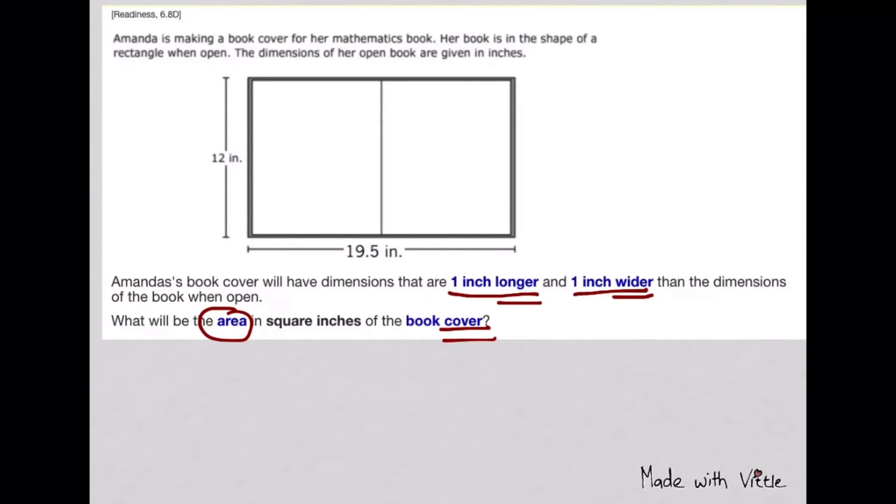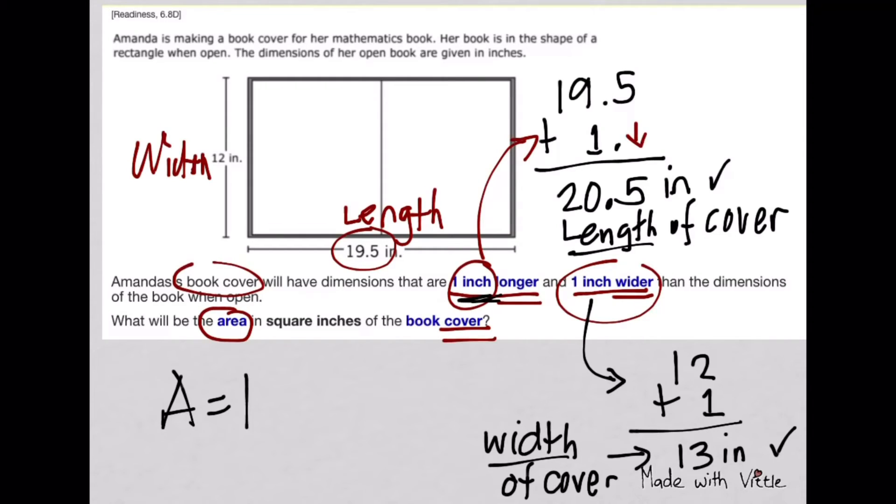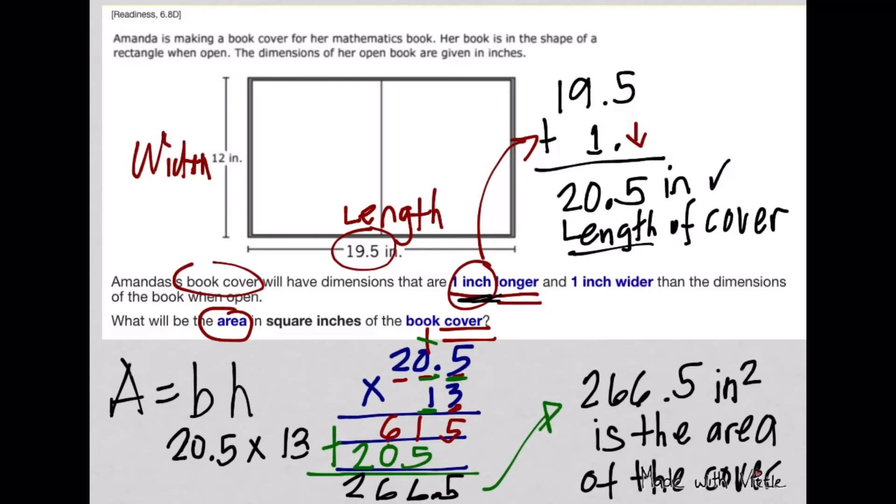Here there's a book that Amanda will cover and we want to find the area of the cover. They said the cover will be longer by 1 inch, so you have to add it here to the length. And it's 1 inch wider, so add it to the width. Now the length of the cover will be 20.5 inches after adding that 1 inch, and the width will be 13 inches. Now that we have the length and width of the cover, we can find the area by multiplying base times height. The area of the cover is 266.5 square inches.